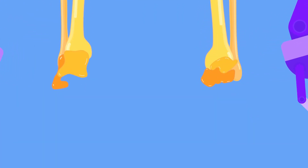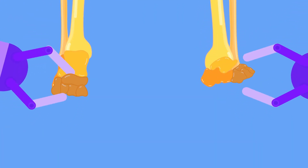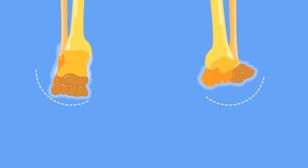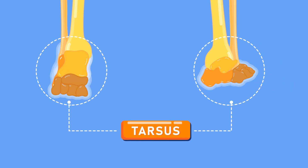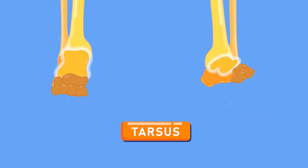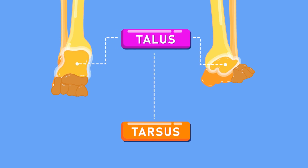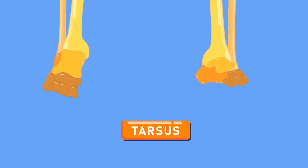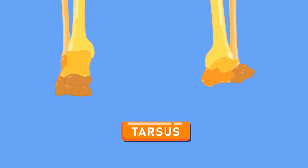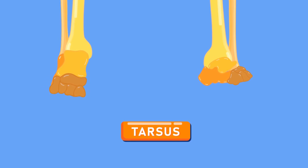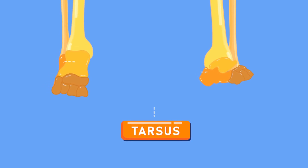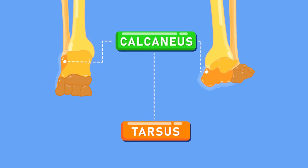Our foot is designed in much the same way as our hands. The ankle, which is similar to the wrist, has seven tarsal bones; the set of bones is called the tarsus. One of those bones is part of a joint with a great range of motion — the talus. The talus bone joins the tibia and fibula and allows the ankle to rotate.